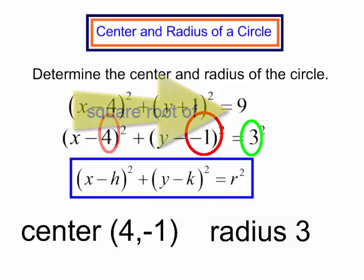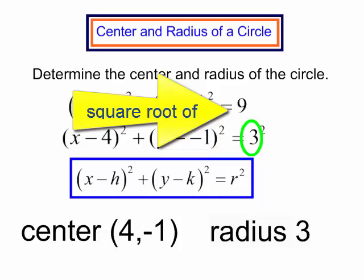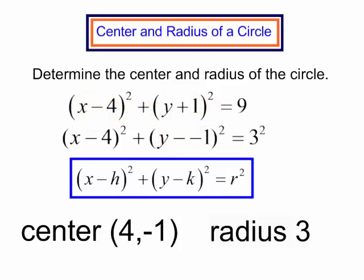Be careful when you're doing the radius. The square root of 9 some students may think it's plus or minus 3. But remember radius is distance. It will always be positive.